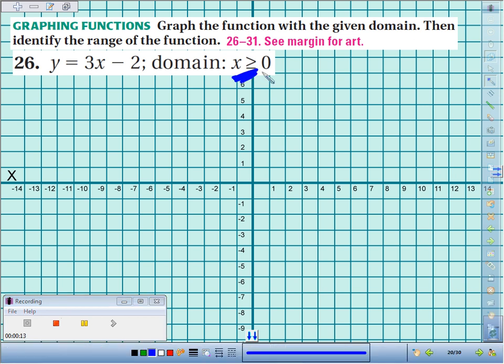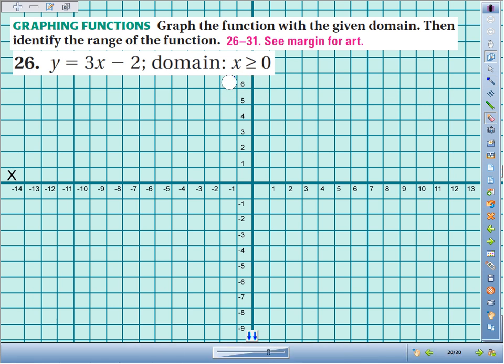If they give us a fancy domain, remember, we're going to have to have a fancy graph. It's not just going to be one of those graphs where we can go anywhere we want with arrows on both sides. It has to stop at 0, so it's going to stop in one spot. This is going to be a ray.